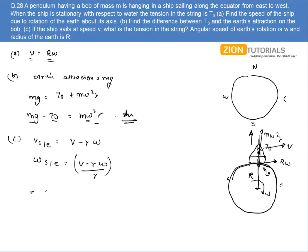Or else I can write that T will be equal to T₀ minus M omega_SE² R. I can write this way.